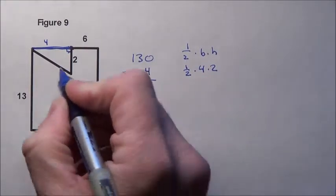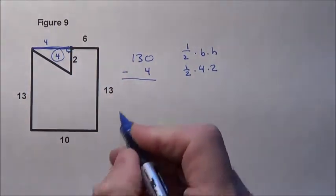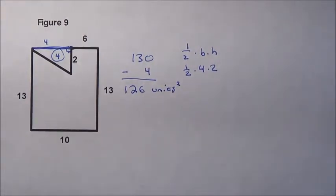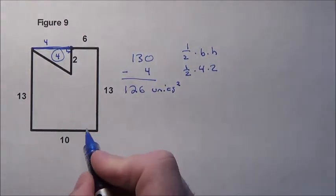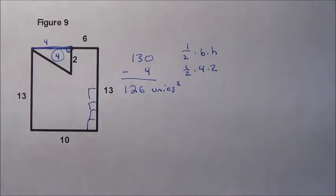So we're simply going to subtract the 4, which is what the area of this little triangle happens to be. And we're left with 126 squared units inside here. So we could fit 126 little squares inside this shape that we have here for figure 9.